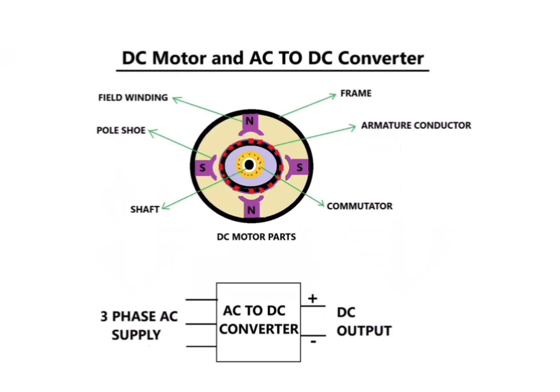The AC to DC converter uses a thyristor bridge circuit, converting three-phase AC supply to a plus/minus DC output voltage.